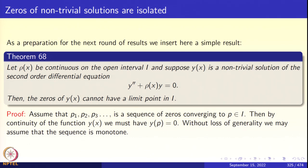As a preparation for the next round of results, we insert here a simple result in differential equations. Let rho(x) be a continuous function on an open interval I. Suppose y(x) is a non-trivial solution—meaning the solution is not identically zero—of the second-order ODE y double-prime plus rho(x) y equal to 0. Then the zeros of y cannot have a limit point in I. We have seen this in the context of Bessel functions, where we could use the fact that J_p(x) is x to the power p times a holomorphic function and invoke the result that zeros of a holomorphic function are isolated. But here we are not talking about holomorphic functions.